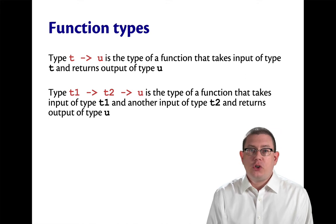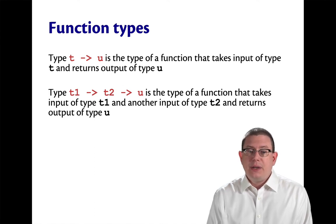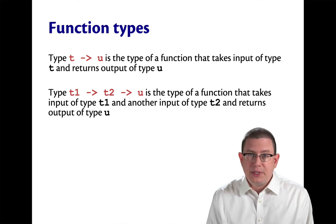Likewise, if you had a function that took in two arguments, type t1 arrow t2 arrow u would be that function's type. It takes in an input of type t1, it takes in another input of type t2, and returns an output of type u.